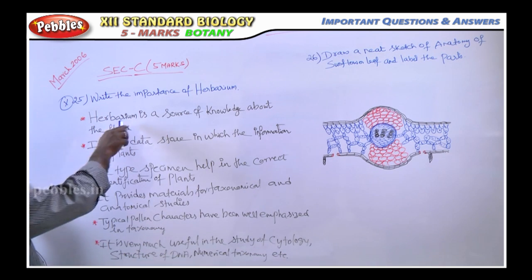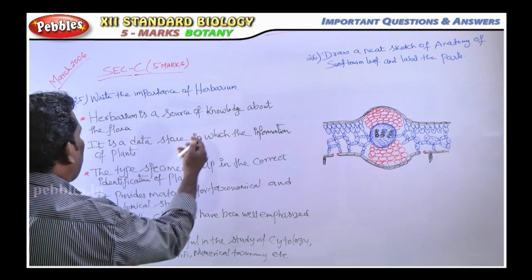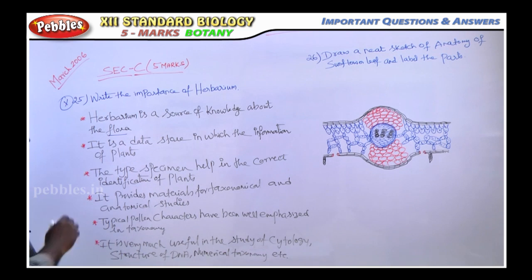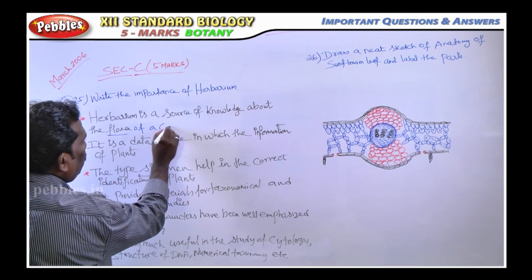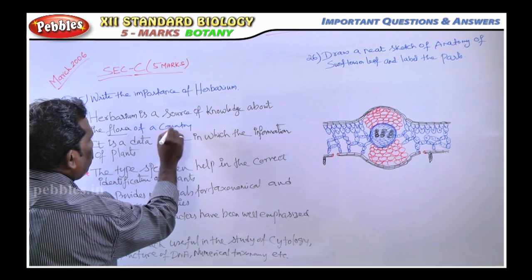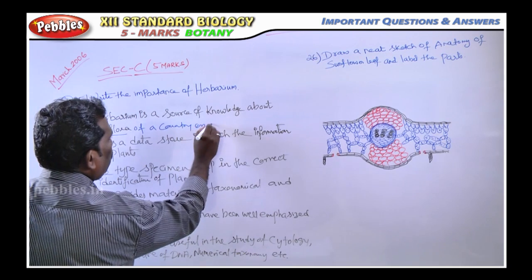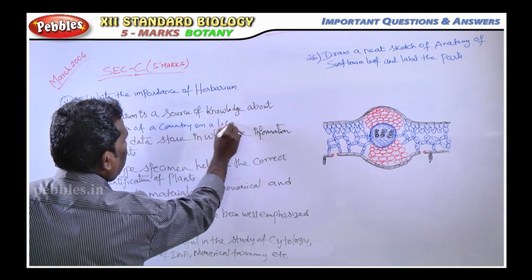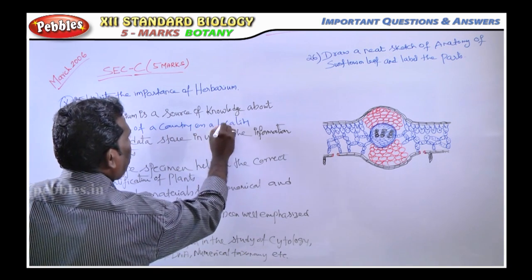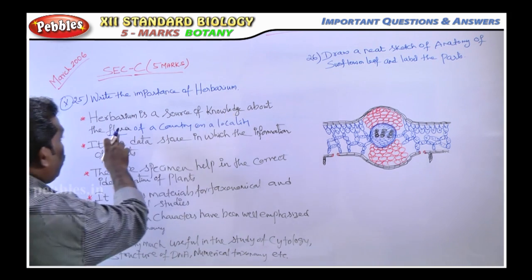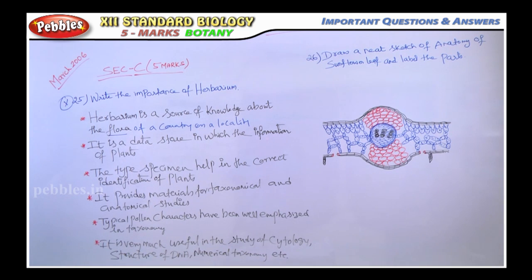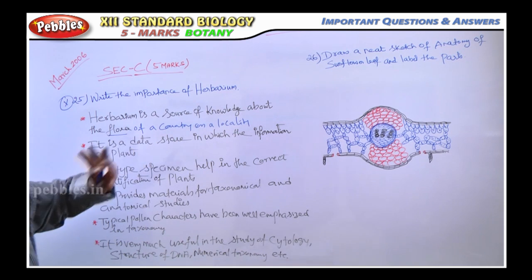The first point: herbarium is a source of knowledge about the flora. Flora means plants — the flora of a country or a particular locality or place. This is the main point: the herbarium is a source of knowledge about the flora.